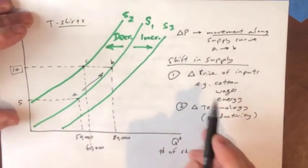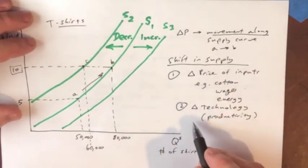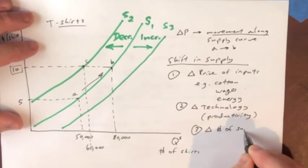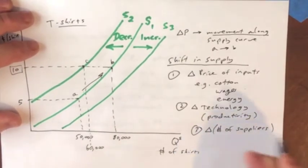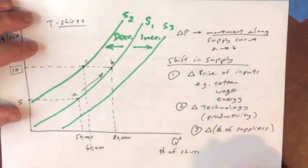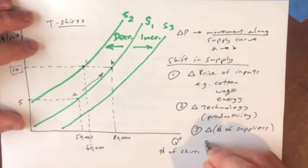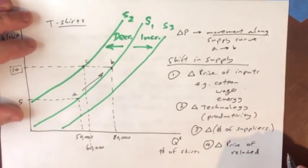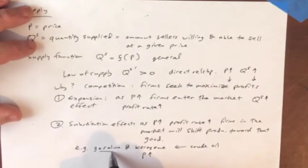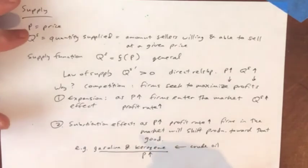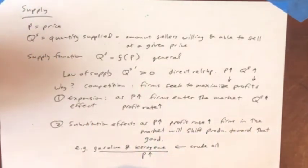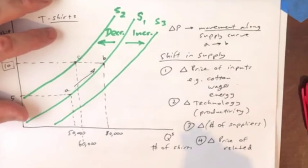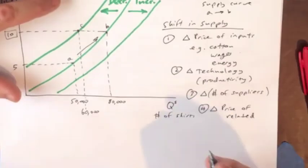So shifts in supply. Price change, change in technology. It could be simply a change in the number of firms or the number of suppliers. If there's more firms, then there's more being produced at that same price. Could be a change in the price of goods that are related. So back to our earlier example here about gasoline and kerosene. These are related goods. So one of them changes, it shifts the supply curve of the other one because firms are shifting into that kind of production. So number four, change in the price of related goods.